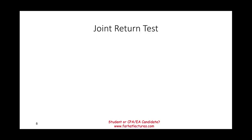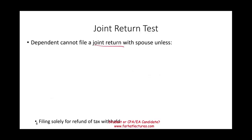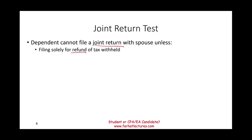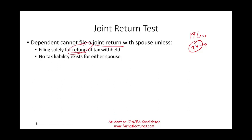The joint return test: the dependent cannot file a joint return with a spouse unless the only reason they're doing so is to get a refund. For example, a son in college who gets married and has taxes withheld from part-time work can file a joint return just to get the withholding back, with no actual tax liability. Otherwise they should not be filing a joint return. This same test also applies to a qualifying relative.